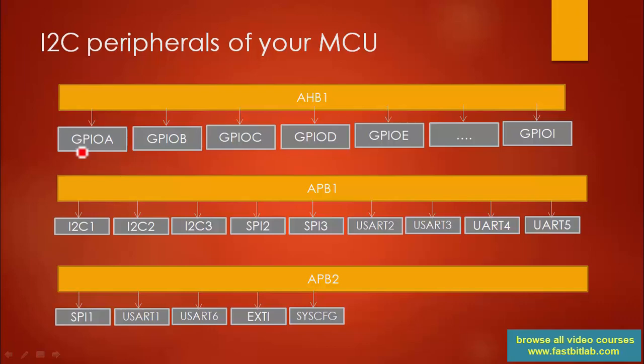The I2C peripherals of your microcontroller. You have to open the reference manual to identify how many I2C peripherals are present in your microcontroller. In the STM32F407X microcontroller, you can see that we have three I2C peripherals. All three I2C peripherals are hanging on the APB1 bus.